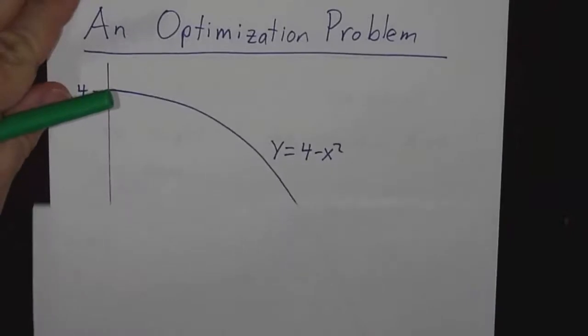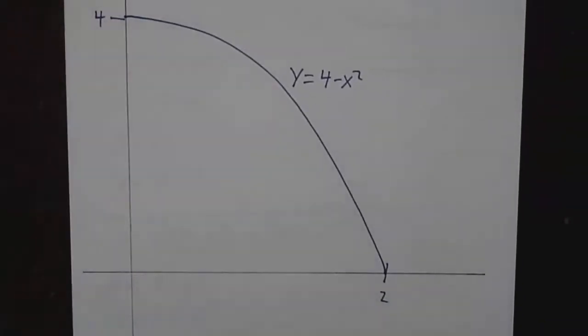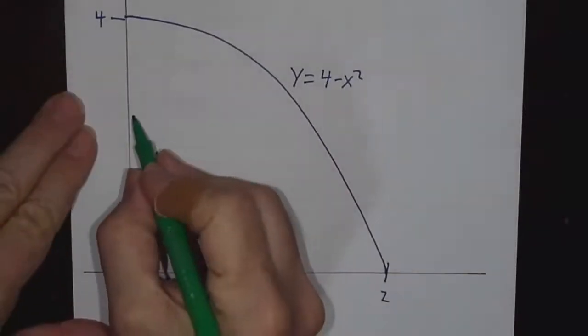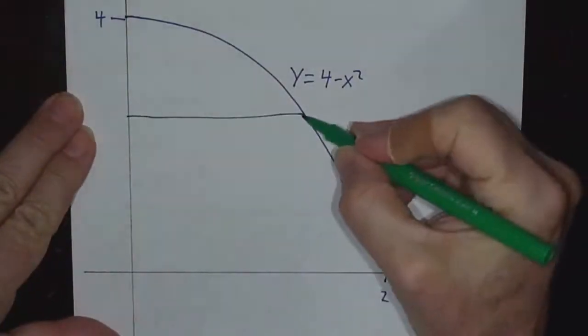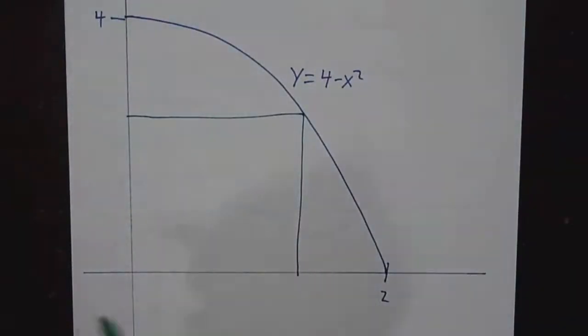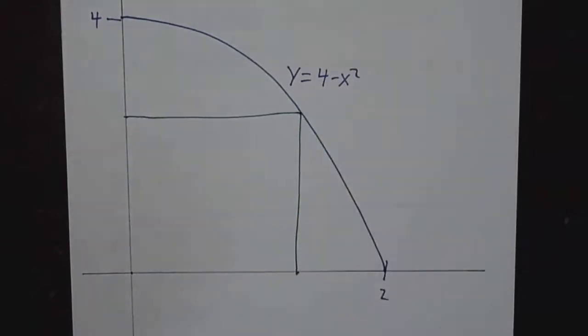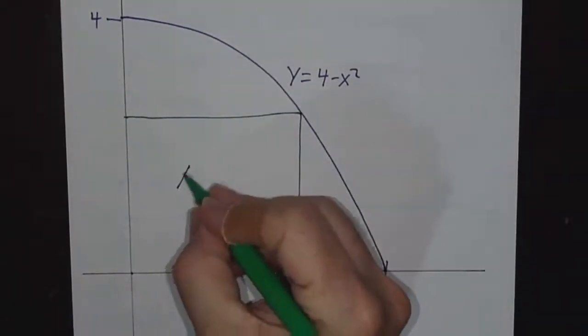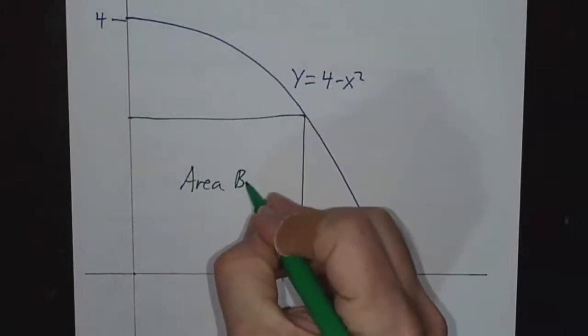As a change of pace, we're going to look at an optimization problem which isn't business-oriented and where you have to define your own variables. In this problem, we're looking at a parabola, y equals 4 minus x squared. And we want to find a rectangle with one vertex at the origin, one on the x-axis, one on the y-axis, and one on the parabola. We want to get the area to be as big as possible.